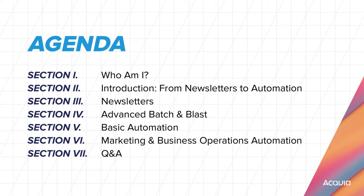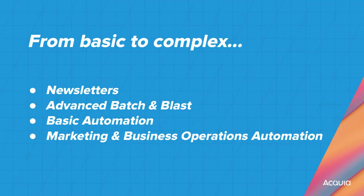Today we're going to go through what the journey is and how the different stages of automation can work with Monarch, from your basic newsletters to really full-scale marketing automation. And that doesn't just mean marketing automation — we will talk a little bit about some business operations that you can automate with Monarch as well. We'll go through really four stages: from newsletters, personalizing batch-and-blast emails, having some basic trigger emails or trigger messages if you like other channels, and then that full automation.